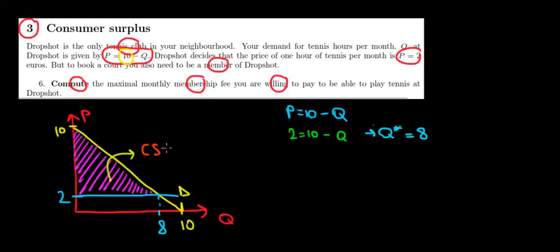So we are willing to pay the area of this triangle: 1 over 2 times the height, which is 10 minus 2. It's a height of 8 multiplied with the length, which is the difference between 8 and 0. So it's another 8. 8 times 8 is 64. 64 divided by 2 is 32. So the maximum willingness to pay for this membership is equal to 32 euros.